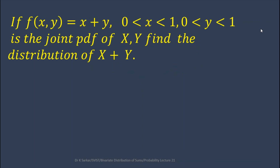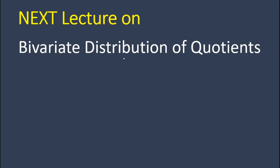Next, if the joint PDF of (X, Y) is f(x, y) equals x plus y for 0 ≤ x ≤ 1 and 0 ≤ y ≤ 1, find the distribution of X plus Y — work out this one yourself. The next lecture will be on bivariate distribution of quotients. If you have any questions, please drop them in the comment box.